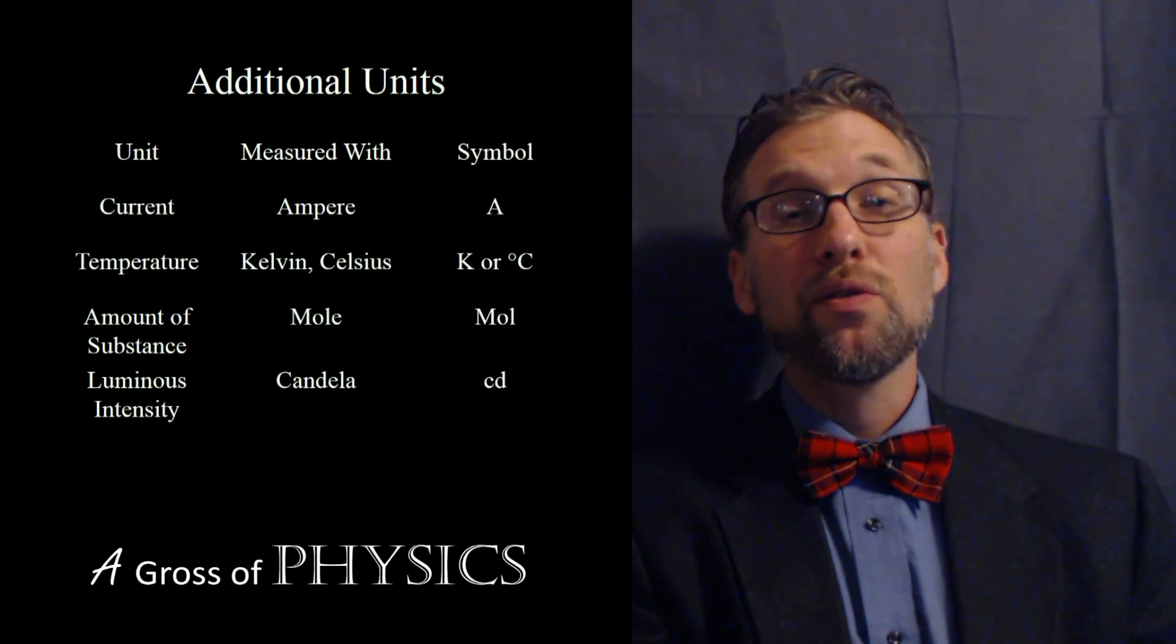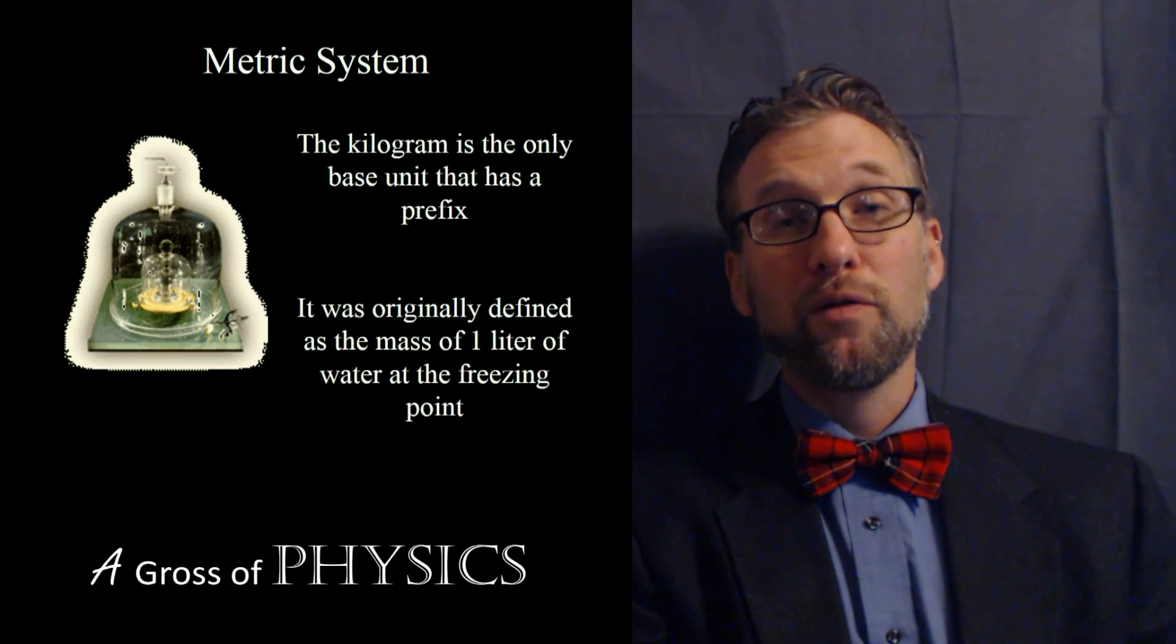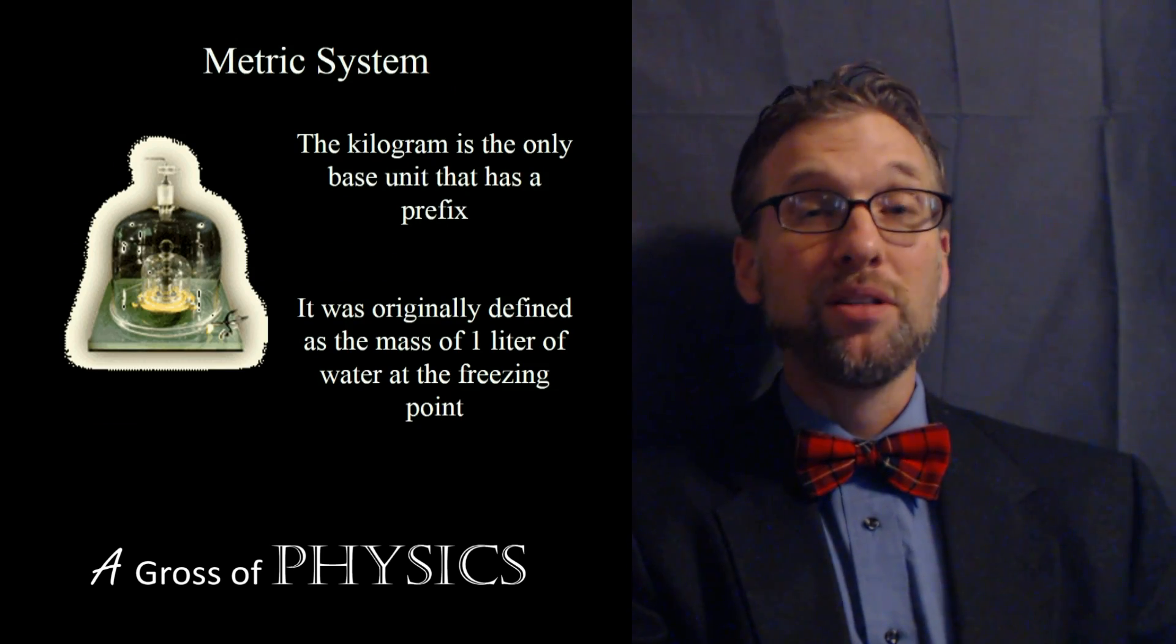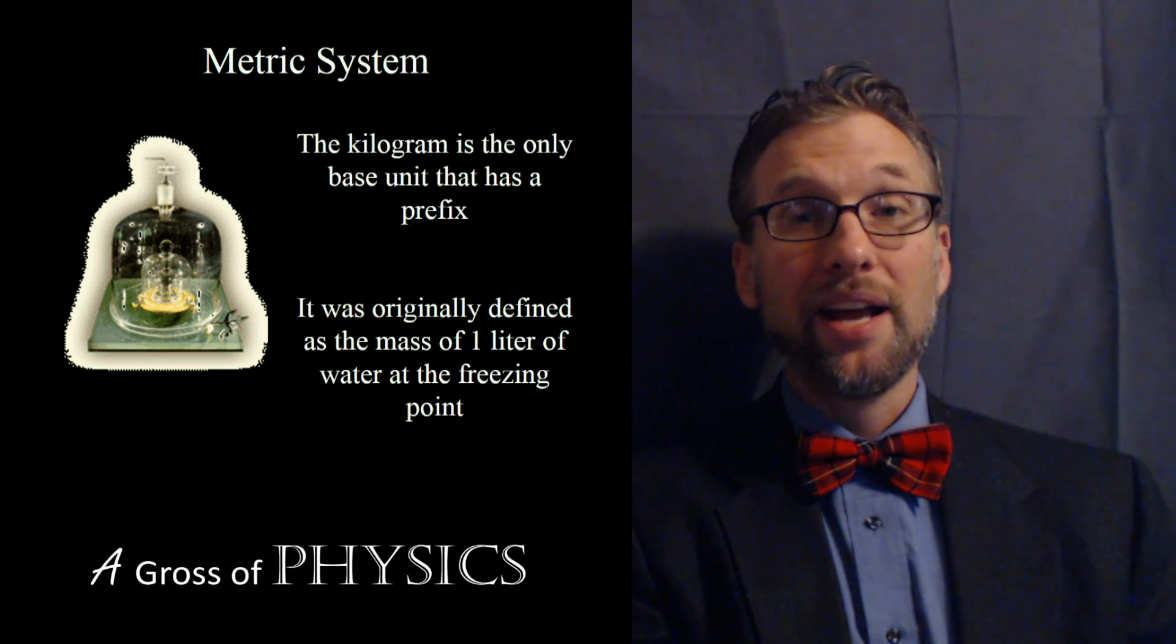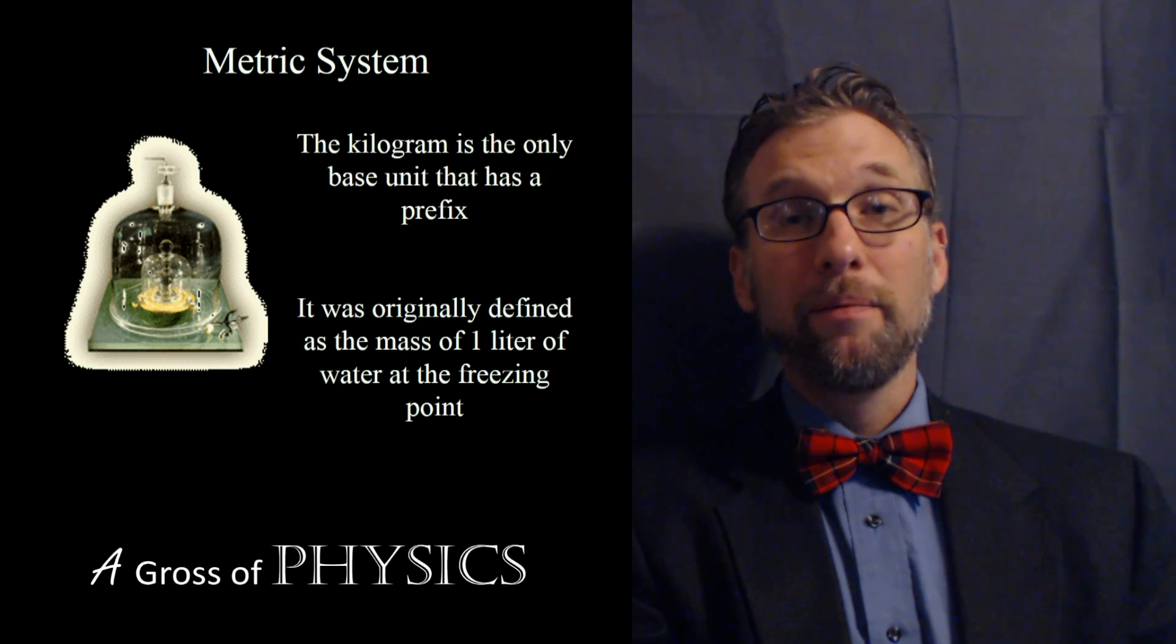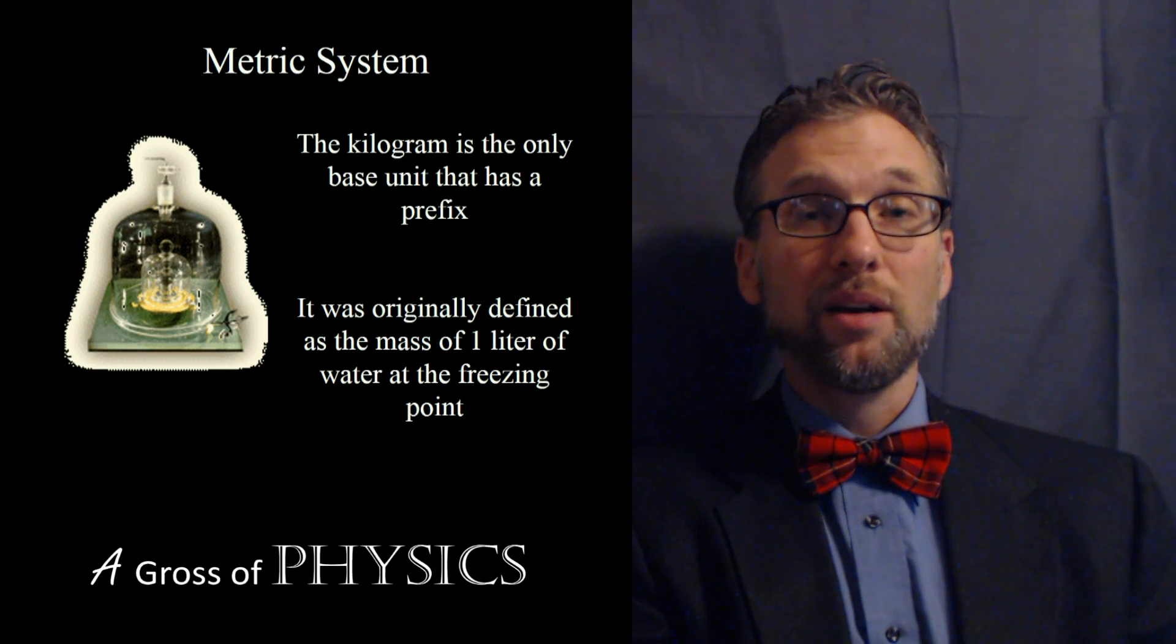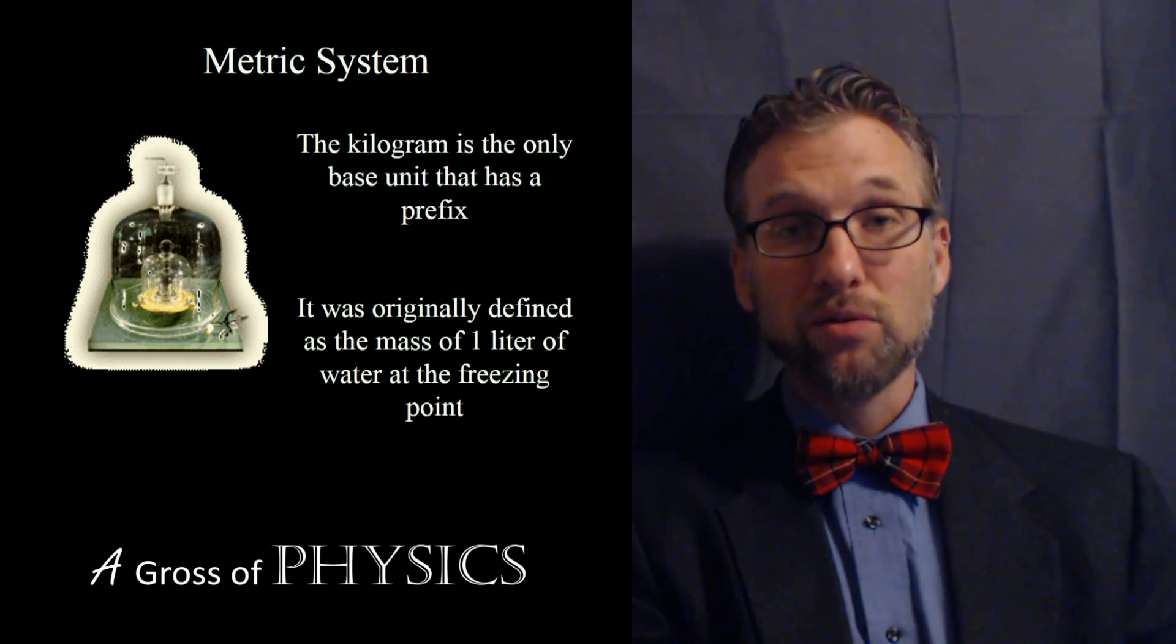Now it's important to realize that while you were writing down the values, there is one value that has a prefix. And that's the value for mass. The kilogram is the only one that has a value that has a prefix. Now if you remember from chemistry or before, the kilogram, kilo, is ten to the three, or one thousand grams. So a kilogram is an approximate mass of a thousand grams.